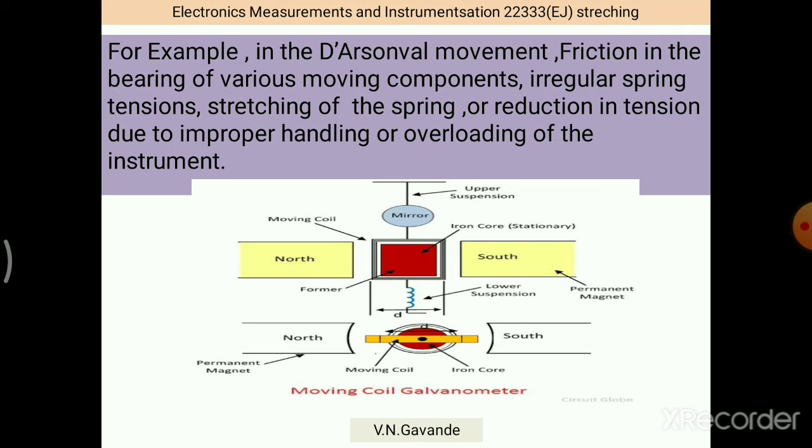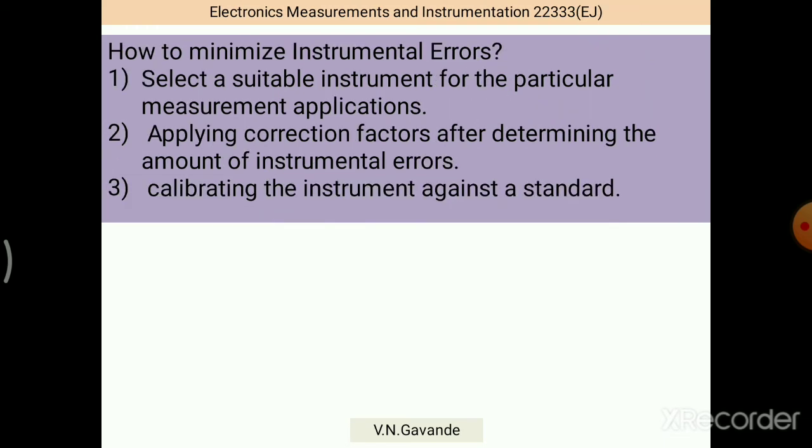For example, in the d'Arsonval movement, friction in the bearings of various moving parts, irregular spring tensions, stretching of the spring or reduction in tension due to improper handling or overloading of the instrument. The picture shows us the moving coil galvanometer. In this case, instead of indicator or pointer, the mirror is used. How to minimize instrumental errors? Very simple. Select a suitable instrument for the particular measurement applications. Applying correction factors after determining the amount of instrumental errors. Calibrating the instrument against the standard.